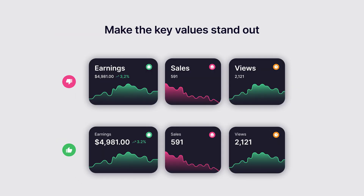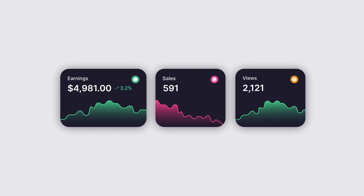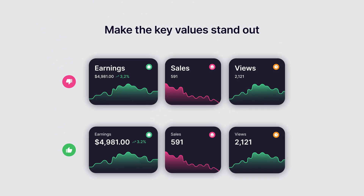For example, consider two designs that display three metrics. In the first example, the titles of the metrics — like sales, earnings, and views — have large fonts, taking the focus away from the actual values. In the second example, the important figures like 591 sales are more prominent, giving users the information they seek more quickly. The second design gets it right: by making the key values stand out while making the labels less prominent, you help users find what they're looking for more easily.